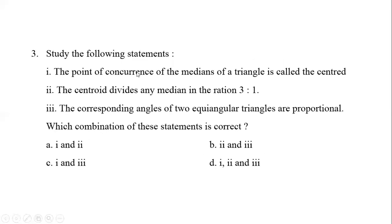Study the following statements: The point of concurrence of the medians of a triangle is called the centroid. The centroid divides any median in the ratio 3:1. The corresponding angles of two equiangular triangles are proportional. Try to find out the solution based on the basics of this chapter.